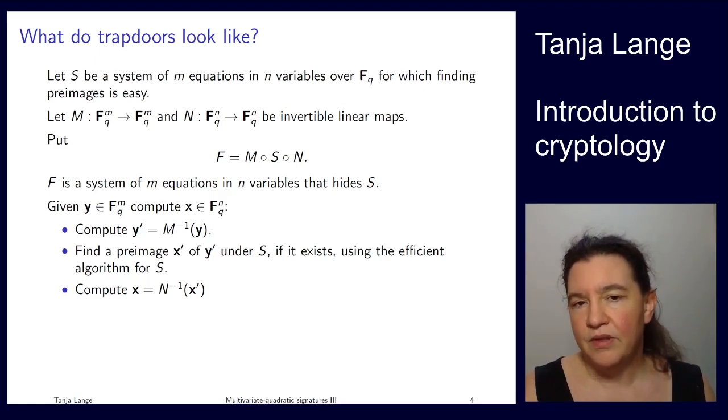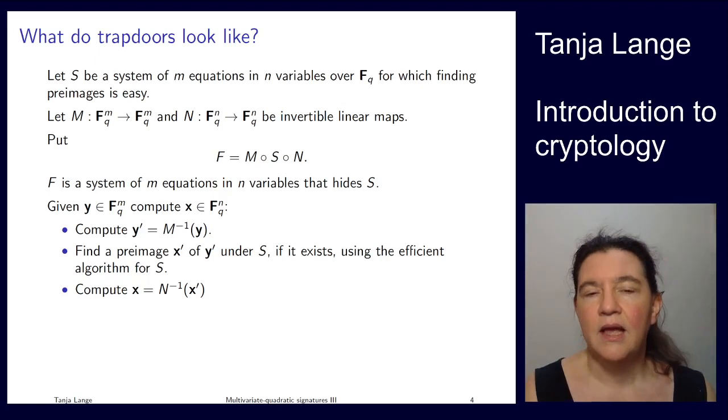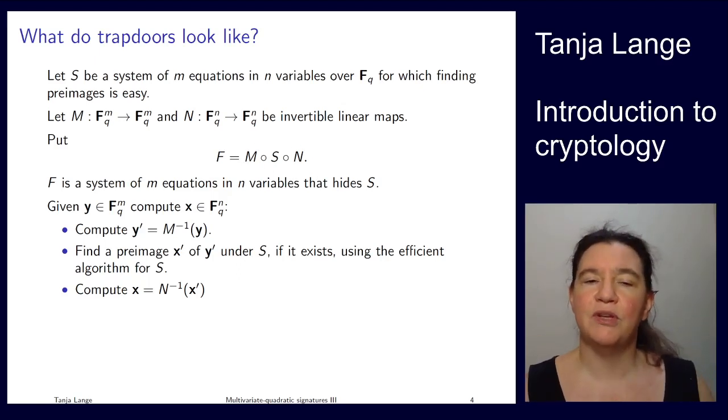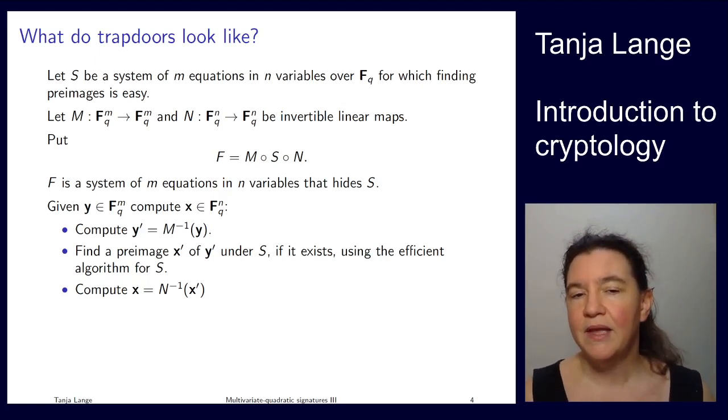Now if we know the parts that went into the construction of f—so if we know how we constructed this public key f from the secret information m, s, and n—and we also know how to solve s, then here's how we can also compute pre-images of f. Somebody gives us, in a signature system, a target y. That's a length m vector over F_q and we're supposed to compute the length n vector over F_q so that f(x) = y.